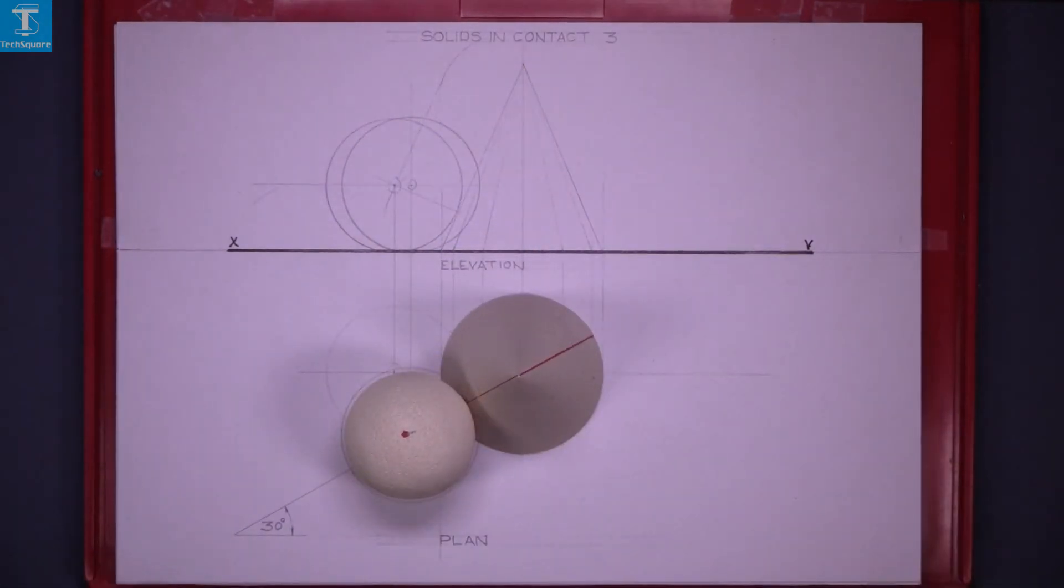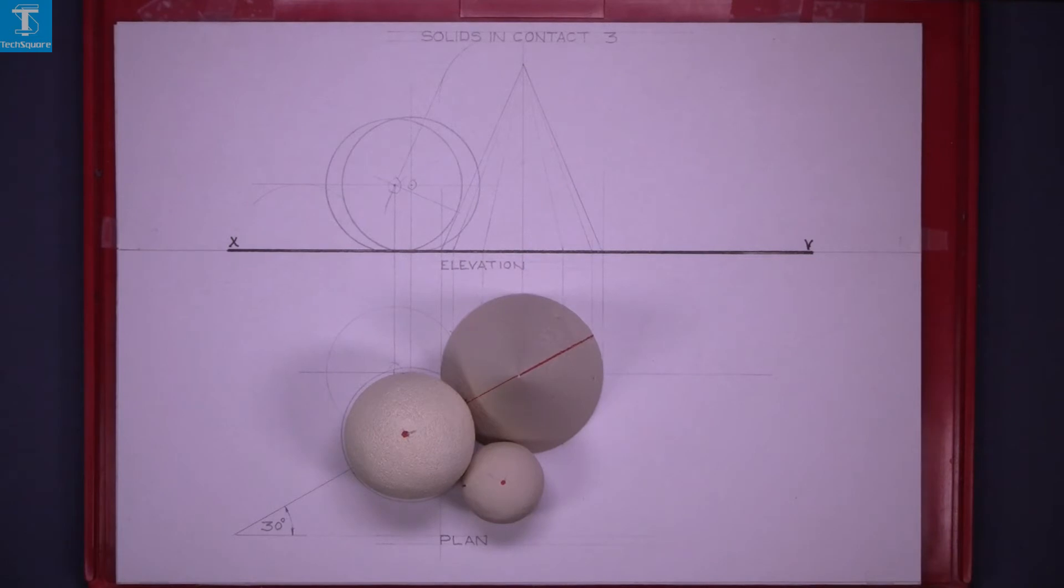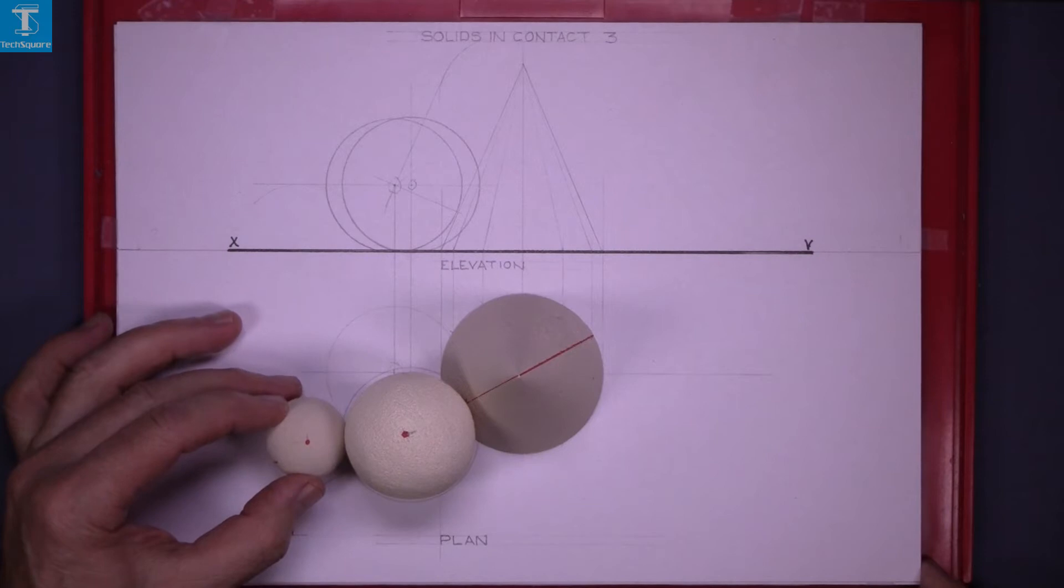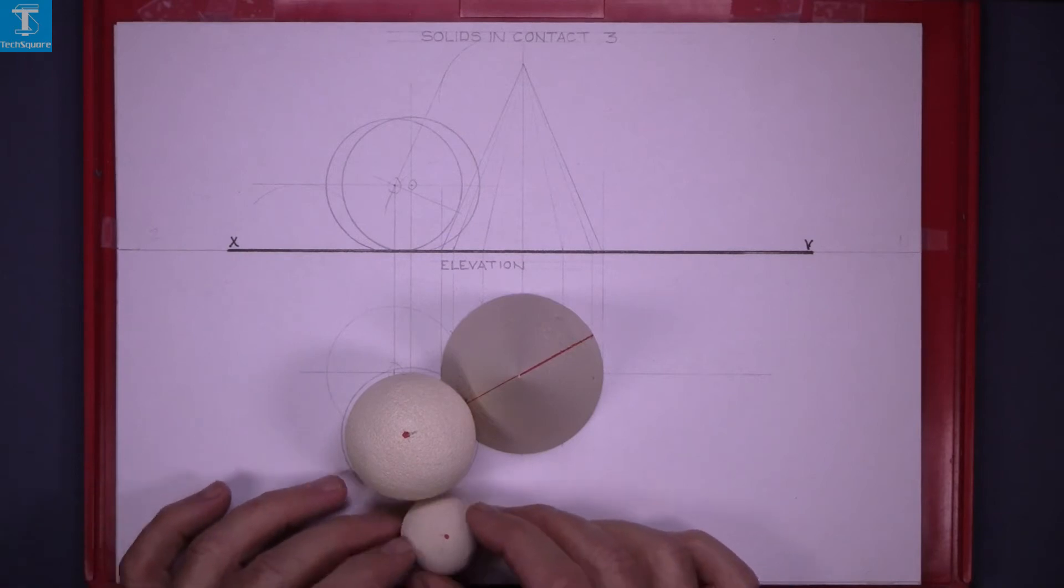The next part of the question, we are asked to draw a small sphere in contact with the two solids and the ground in this location. To do that, we are going to draw the sphere outside here on the left hand side as we have done in Solids in contact 2 and rotate it around the larger sphere.